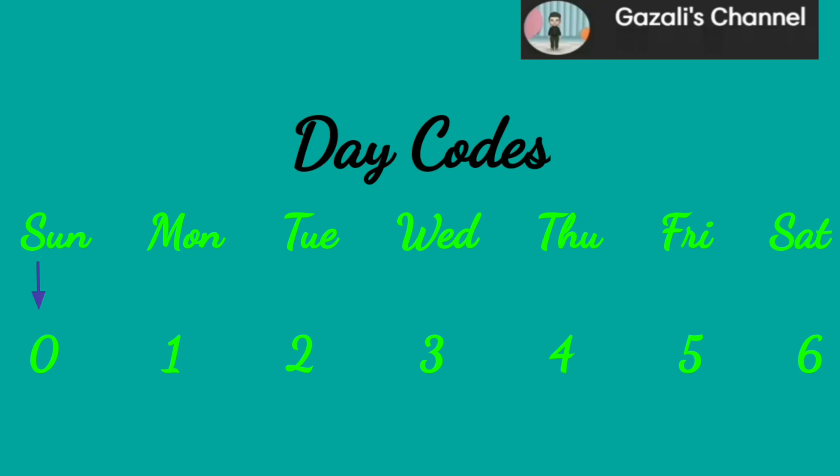Start: Sunday = 0, Monday = 1, Tuesday = 2, Wednesday = 3, Thursday = 4, Friday = 5, and Saturday = 6.